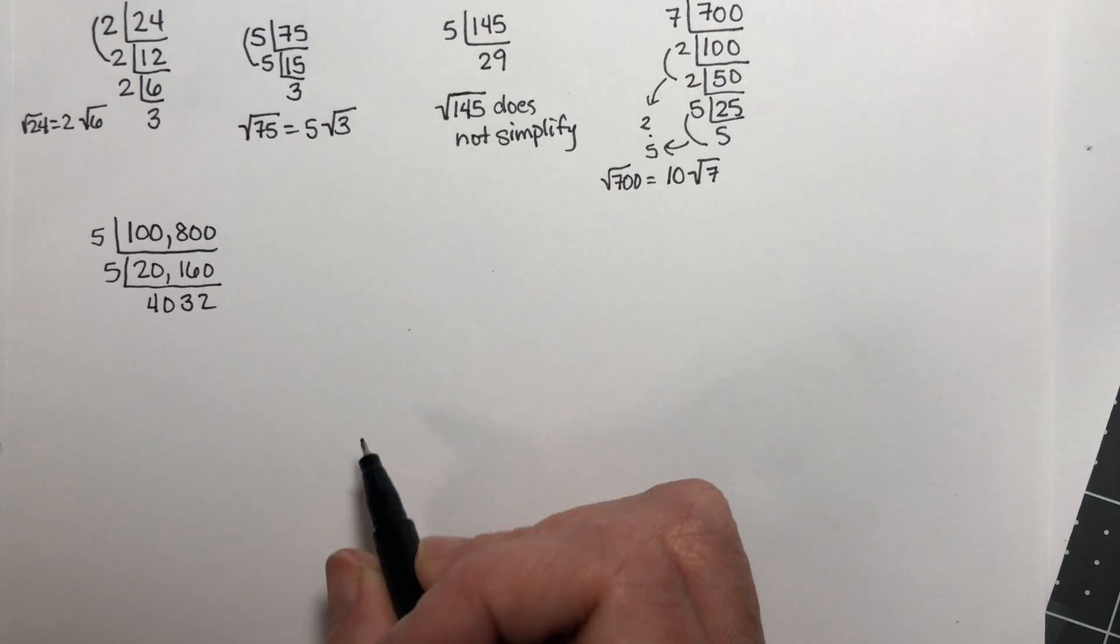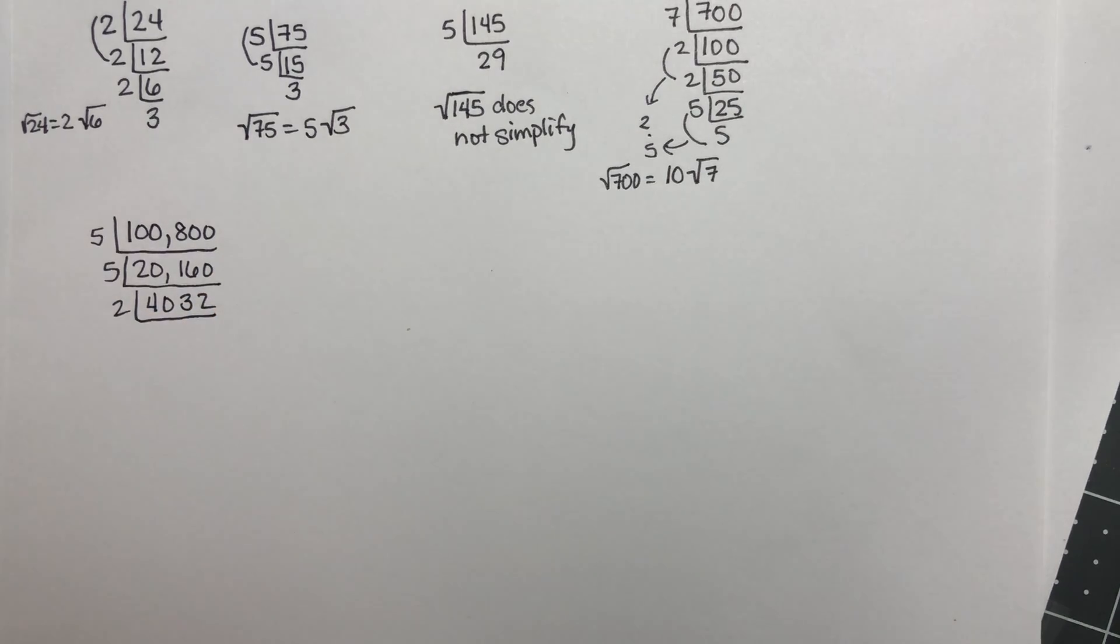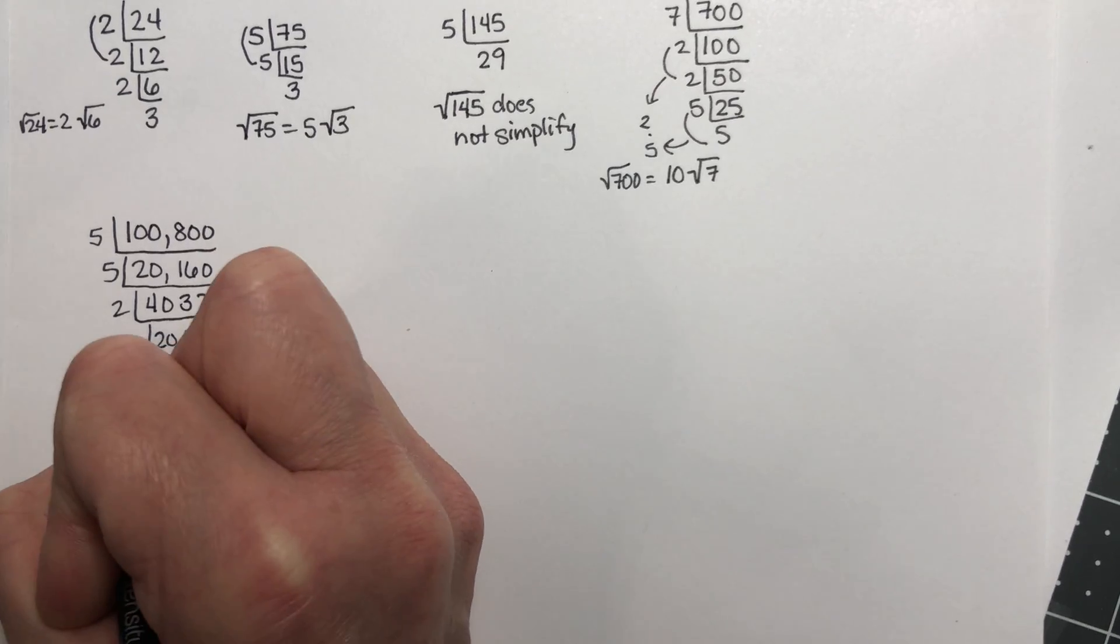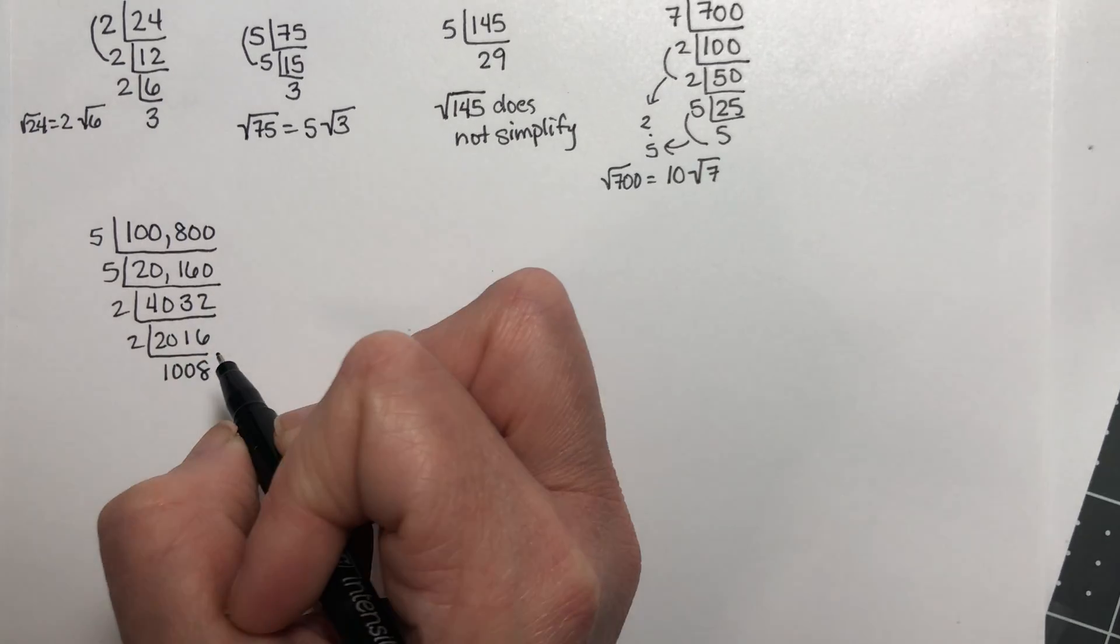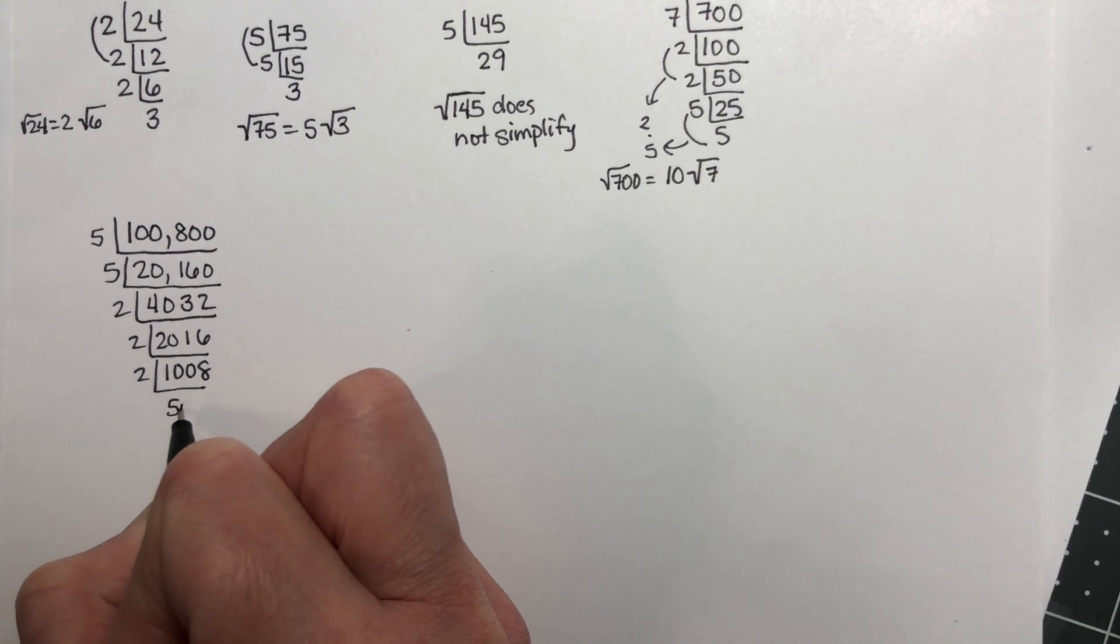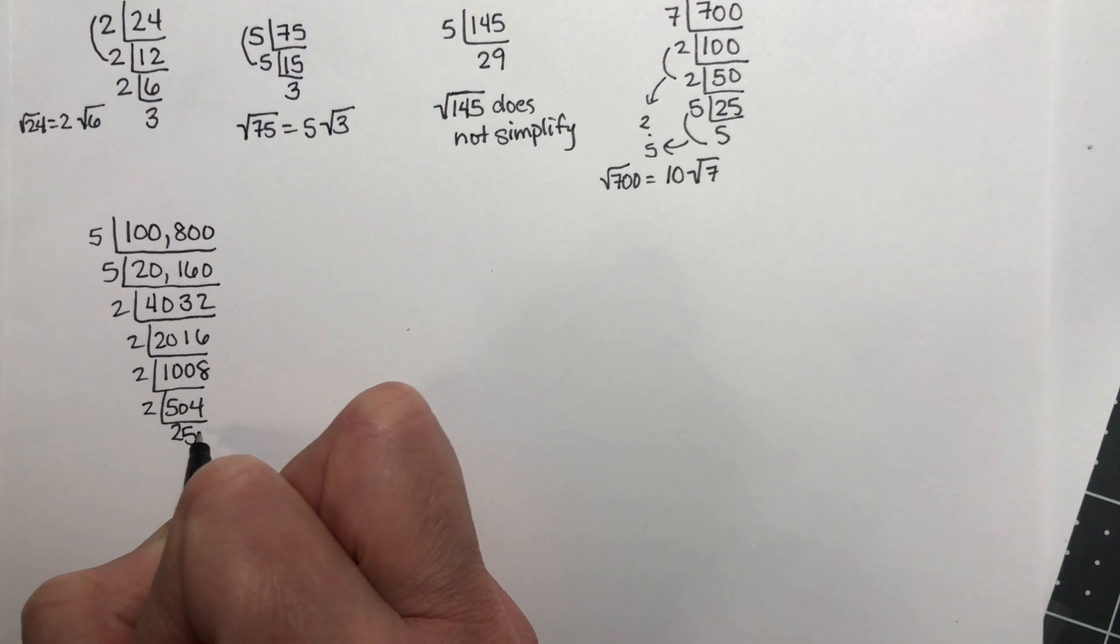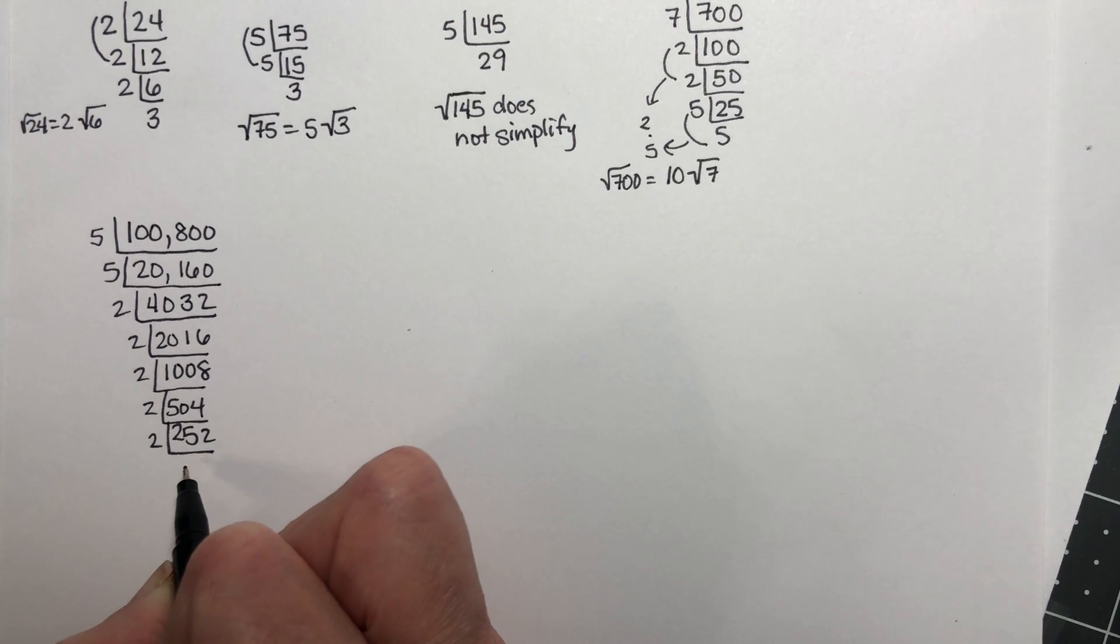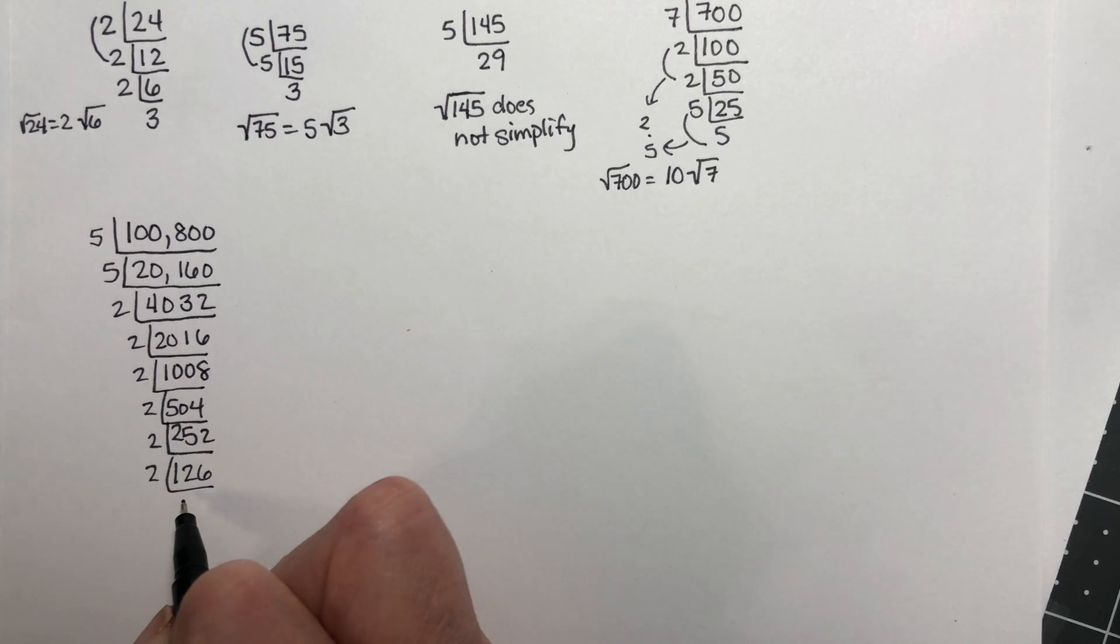So it's no longer divisible by 5 because it ends in 2, but it is even, so it's divisible by 2. So let's deal with the 2's for a while. Divide that by 2 and you get 2,016, which is again divisible by 2. 1,008. And 2 again, 504. And 2 again, 252. And 2 again, 126. And then 63.